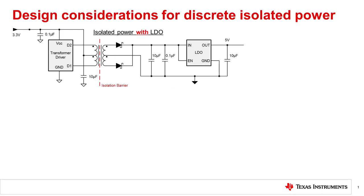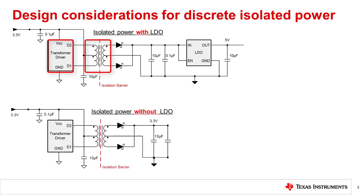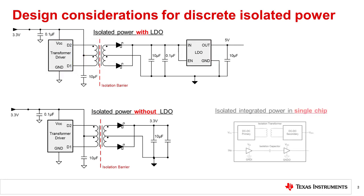When the voltages are vastly different, or in cases where no secondary side power is readily available, one of the most common multi-chip or discrete solutions is to use a transformer and transformer driver to generate the secondary side power from the primary side. This solution can be designed with, or without, an LDO. The other solution is an integrated IC solution that includes the digital signal isolator and integrated transformers, as well as an on-chip LDO, like the one shown here.